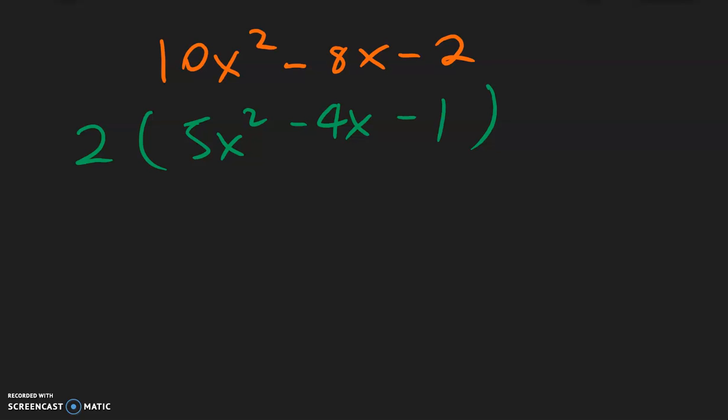And now we can just factor the inside. So the inside, what two numbers multiply to get 5? 1 times 5. And then for 1, we have 1 times 1. Cross multiply, 1 times 1 is 1, 5 times 5 is 5.